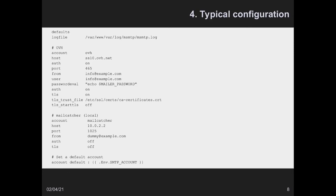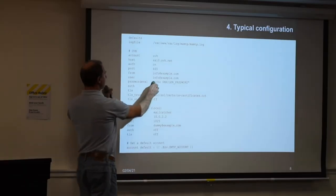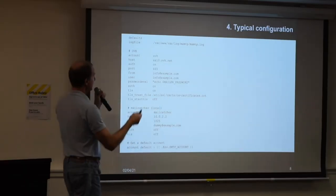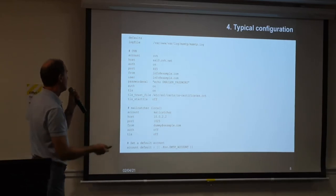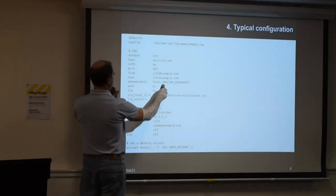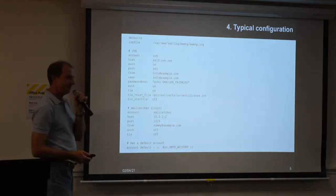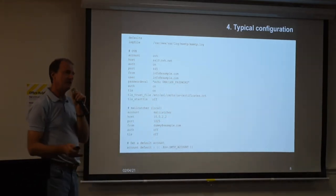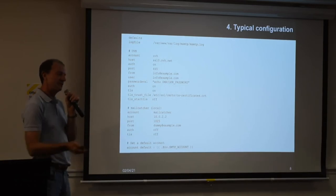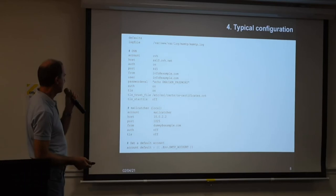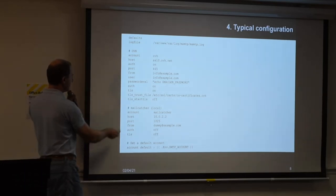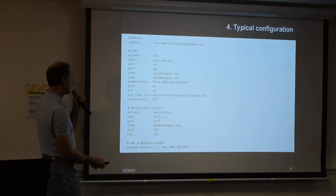One nice feature of MSMTP is that you don't have to write the password in your configuration file. You write a command that will be executed by the program, and it assumes that the mailer password variable has already been loaded as an OS environment variable on your worker container. That's the production account. The other interesting one is the MailCatcher local environment.